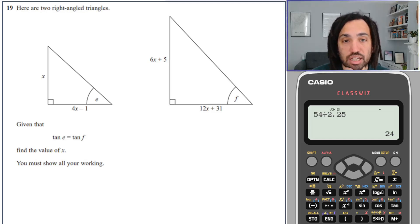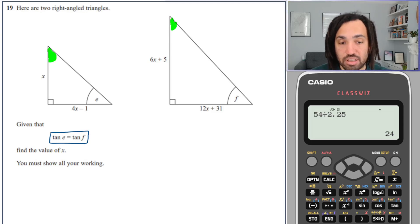Final question. We have two right angle triangles. Now these two are similar because it says here that tan E is equal to tan F, which essentially means that E and F are the same angle. We've also got a right angle in both of them. So that means that the final angle at the top must be the same for both of them, so these are similar triangles.